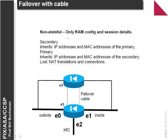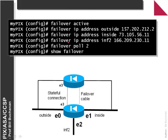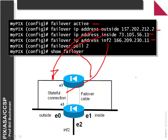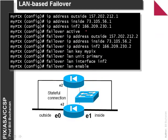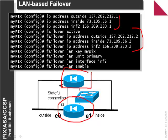For failover with a cable, configuration states that failover is active, and we define the failover addresses for each port — inside will be one address, INF2 another, and outside will be the secondary IP addresses that will be taken over on the device. For LAN-based failover, we define our primary IP addresses, which should be unique and used to connect the devices. Then we define the failover IP addresses, which should be the IP addresses of the other device.